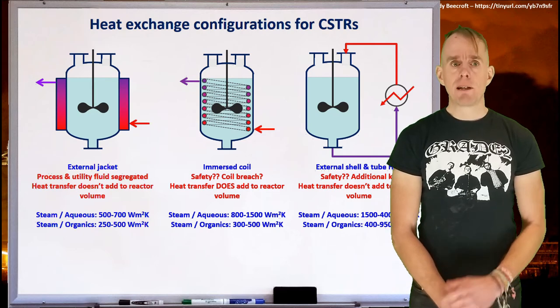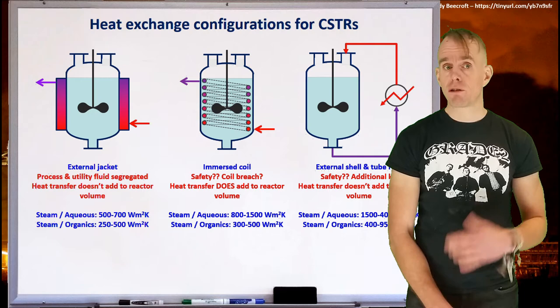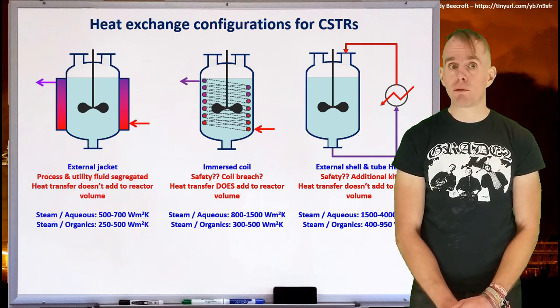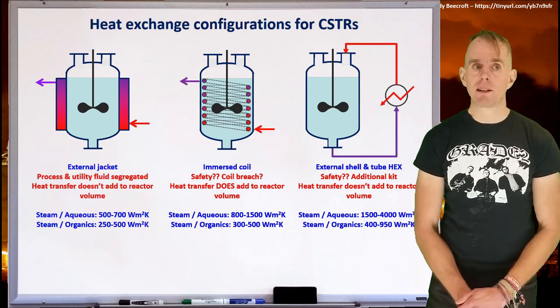If we have a look at those heat transfer coefficients, again, we can see that there may be three times or more compared to an external jacket. So steam on aqueous, 1500 to 4000 Watt per square meter Kelvin, and steam and organics, 400 to 950 Watt per square meter Kelvin.